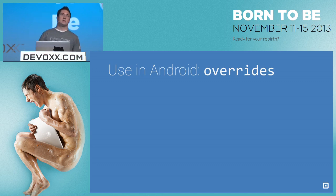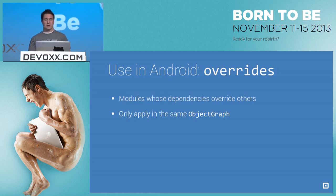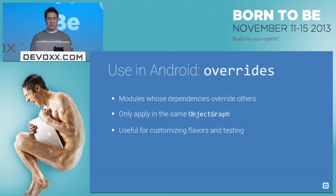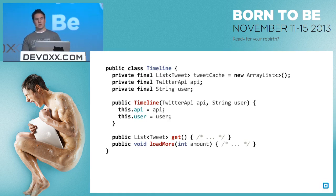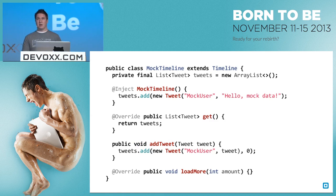Another extremely useful feature of Dagger is overrides. Overrides allow you to specify modules whose dependencies will override other dependencies in the graph. This only applies when you're in the same object graph. If I'm providing my tweeter and want to override it, the modules both have to be in the same graph — you can't plus a module that wants to override the tweeter into another graph. Where this becomes extremely useful is customizing for build flavors and build types, and also for testing both manual and automated. This works really well with interfaces — we could have a mock timeline implement a timeline interface and then have a real timeline.